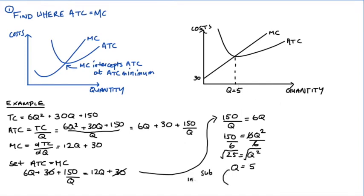Okay, in order to find the level here, I can substitute q is equal to 5 into either my marginal cost or my average total cost curves. It doesn't matter which one. Let's put it into marginal cost. So I'll get 12 times 5 plus 30, and that's all equal to 90. Visually, that looks like this.